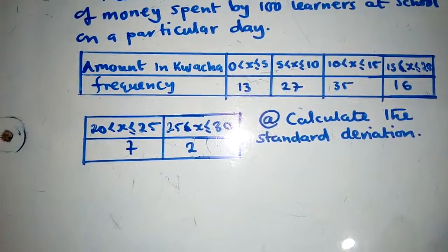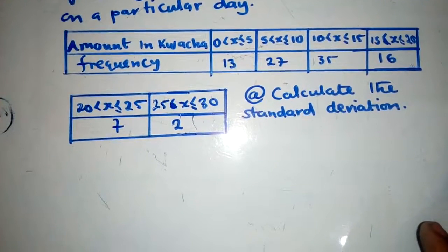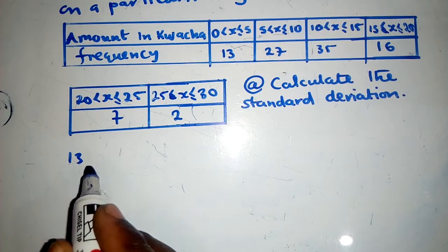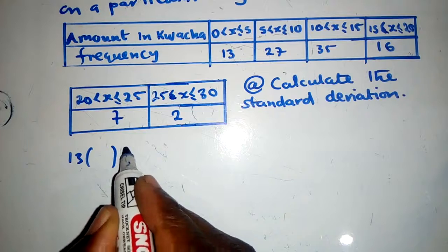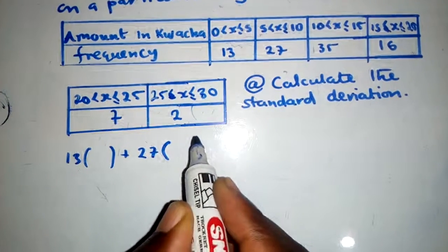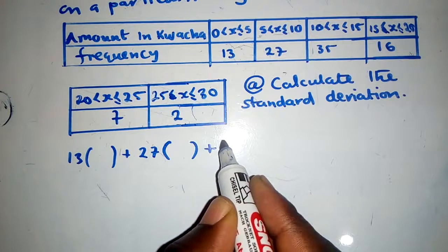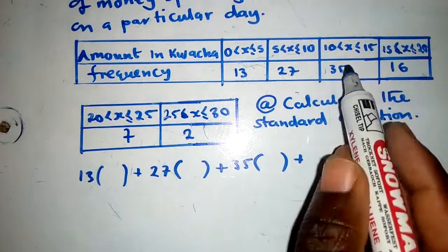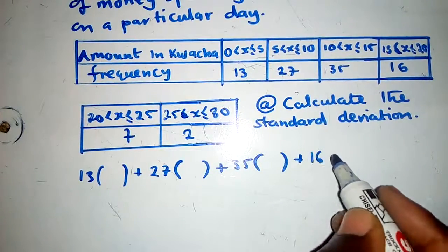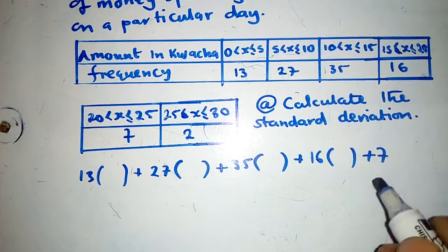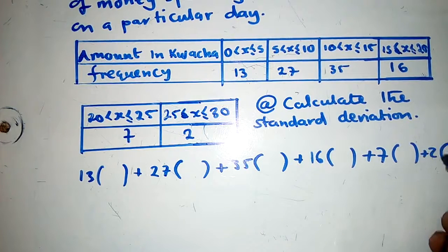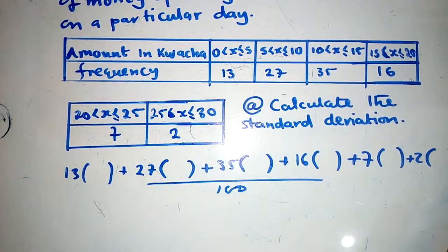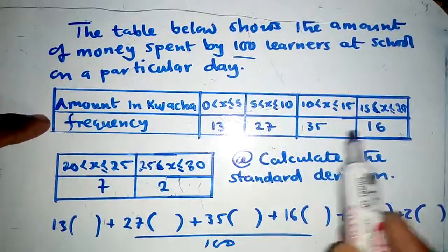To find the standard deviation, we first write down the frequencies and leave spaces for the midpoints, as we'll be solving for the mean. These are the steps to remember. The frequencies are written down — 16, then 7, then 2 — and the total number of people is 100, so all frequencies sum to 100.